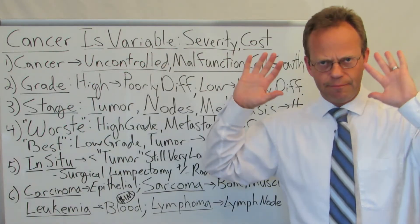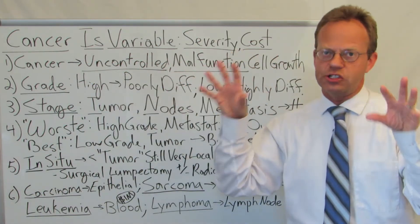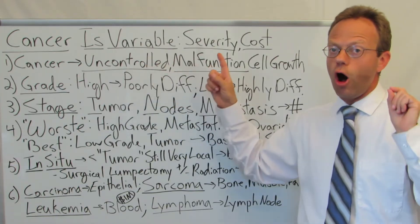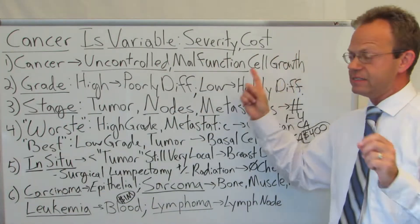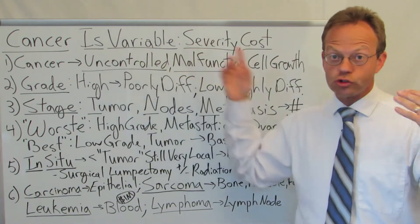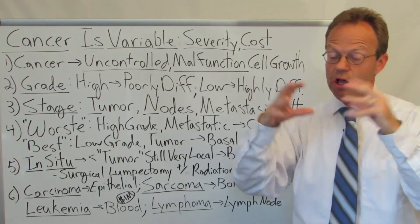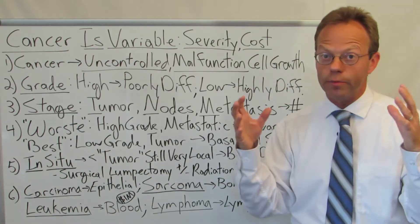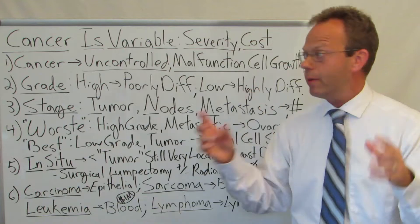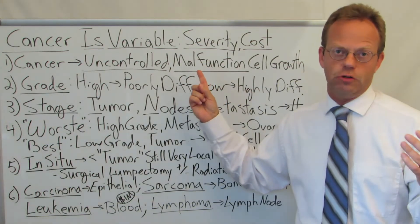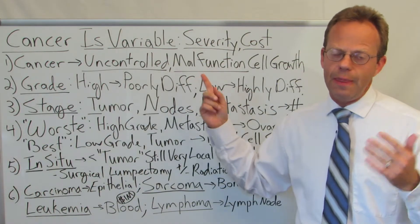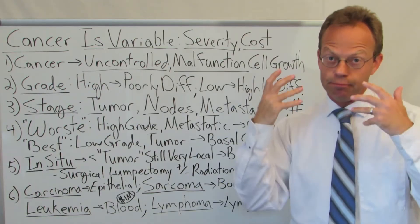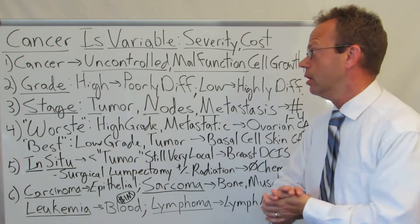At a very basic level, we should understand what cancer is. It is uncontrolled, oftentimes malfunctioning cell growth. The cells are growing uncontrollably in a way they shouldn't be, and those cells also don't function the right way — that's why it's such a devastating disease that can obviously lead to death.